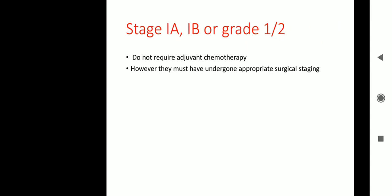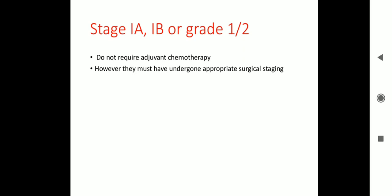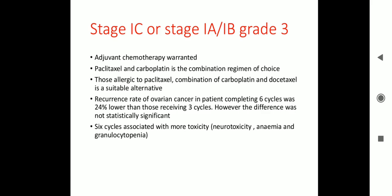Stage 1A, 1B, or grade 1 or 2 do not require adjuvant chemotherapy; however, they must have undergone appropriate surgical staging. Stage 1C, or stage 1A/1B with grade 3, requires adjuvant chemotherapy — paclitaxel and carboplatin is the combination used. For those allergic to paclitaxel, carboplatin and docetaxel is a suitable alternative. Recurrence rate in patients completing 6 cycles was 24% lower than those receiving 3 cycles, though not statistically significant; 6 cycles are associated with more toxicity including neurotoxicity, anemia, and granulocytopenia.